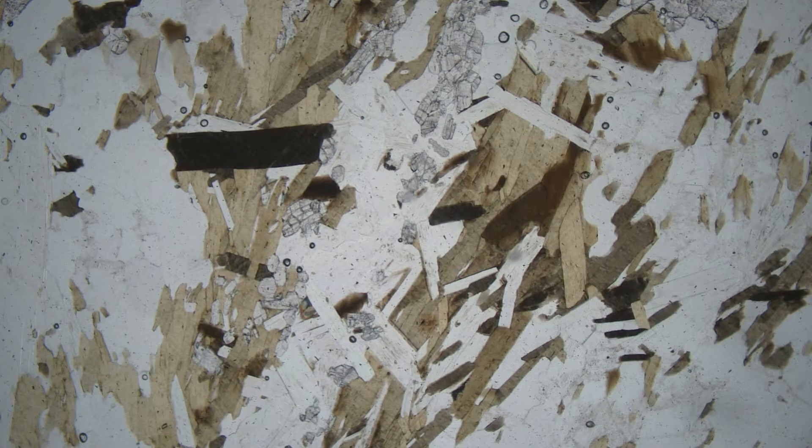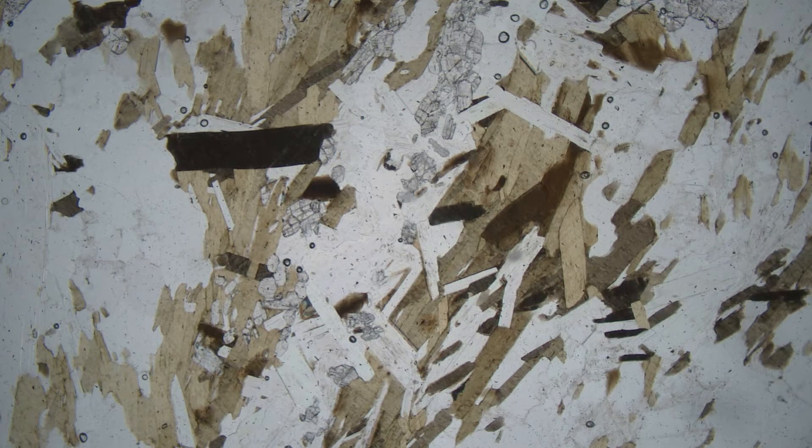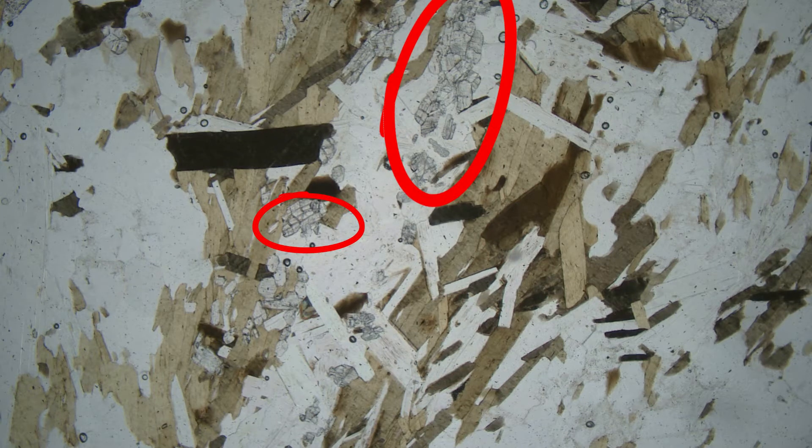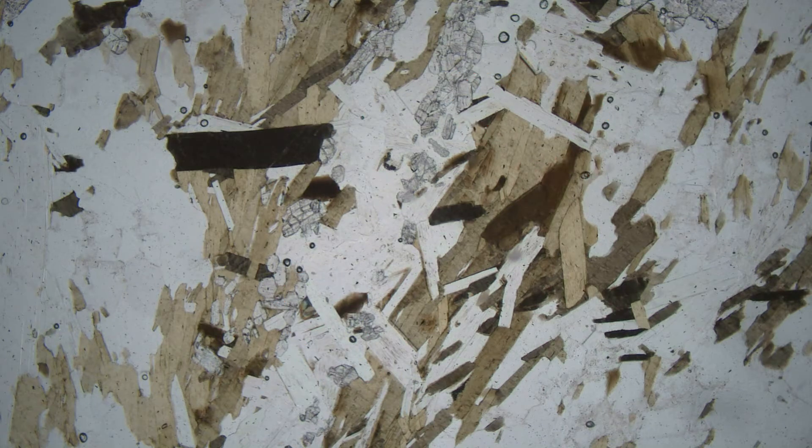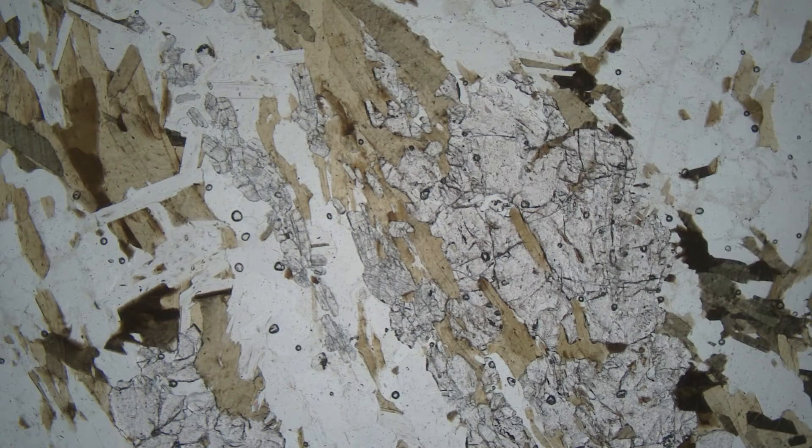This view shows a schist that contains brown biotite. It also contains a clear high relief mineral that is kyanite. The clear grains that have the same shape as biotite are muscovite white mica, and the background material is quartz and feldspar. As the stage rotates, we can see that biotite is pleochroic.